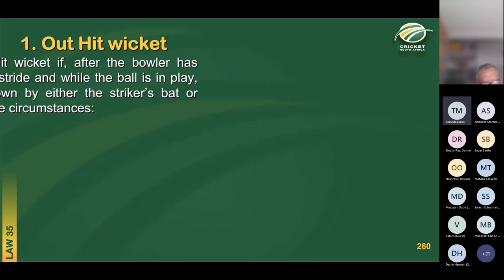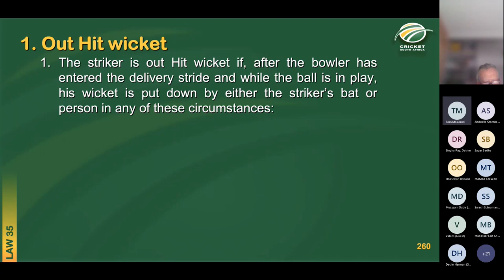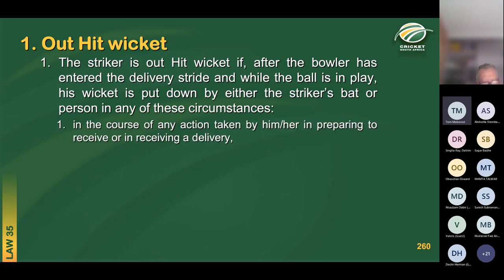Law 35 is hit wicket, and we'll have a decision for you all to make, so pay careful attention. How can a striker be out hit wicket? The striker is out hit wicket after the bowler has entered the delivery stride — that is, after the bowler has landed on his or her back foot — and while the ball is in play, the striker's wicket is put down by the striker's bat or person. The first instance is in the course of any action taken by the striker in preparing to receive or in receiving a delivery.